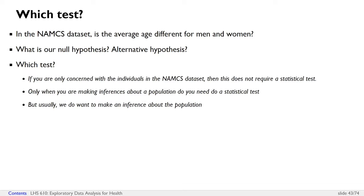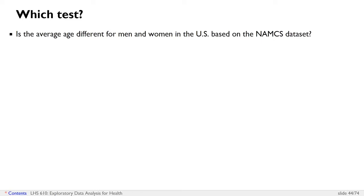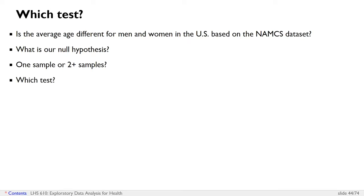Usually we do want to make an inference about a population given a dataset. So for this particular question, our null hypothesis is that the average age is no different. We're comparing the average age for men and women, so this is a two-sample question, not a one-sample question. When we have two-sample tests where one variable is categorical — in this case, sex, with two options of men and women — and one variable is continuous — which is age — the test we run is either a t-test or a Wilcoxon test.